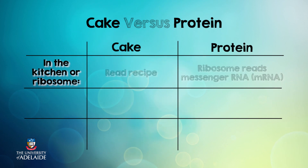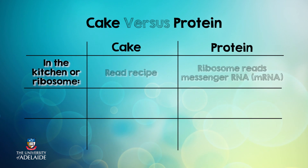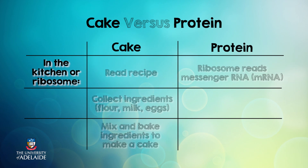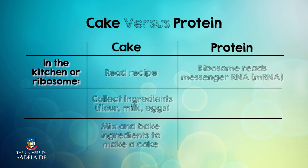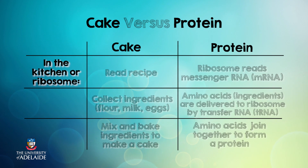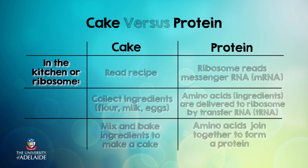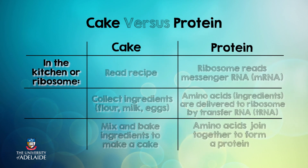In my kitchen, I first carefully read the cake recipe to make sure that I have all of the ingredients and equipment that I need. In a cell, ribosomes read or translate the instructions in the messenger RNA. To make a cake, I collect all of the ingredients I need — like flour, milk, and eggs — then mix them together in a bowl and finally bake in an oven. To make a protein, a cell also has to gather all of the necessary ingredients. These ingredients are called amino acids. Amino acids are delivered to ribosomes by molecules called transfer RNA. Ribosomes know which amino acids to select because they've read the instructions in the messenger RNA. Ribosomes then join the selected amino acids together to form a protein.